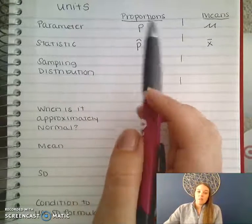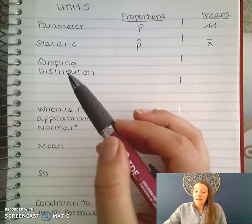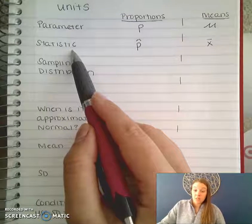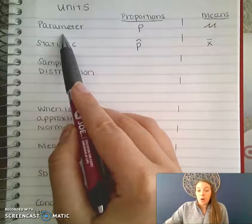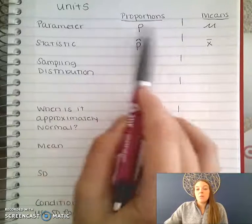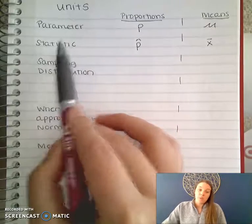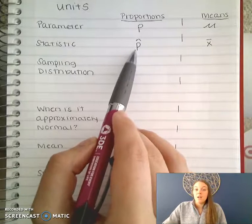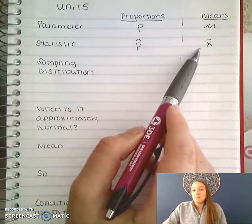The first thing we have to do is think about the variables or symbols that we use for the different types of information or data. Remember there's a difference between parameter and statistic. A parameter explains a population — the parameter for proportion is p and the parameter for means is mu. A statistic is a number that describes a sample, so the statistic for a proportion is p-hat and the statistic for means is x-bar.